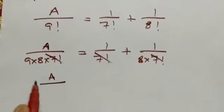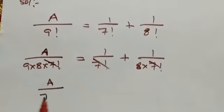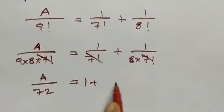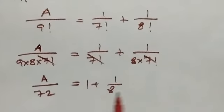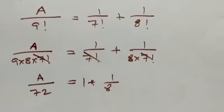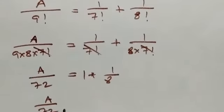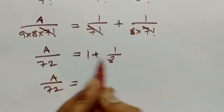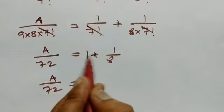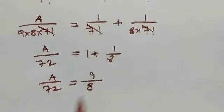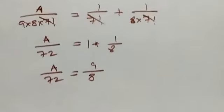a by 9 factorial, 72 equals 1 plus 1 by 8. So a by 72 equals 8 plus 1 by 8.